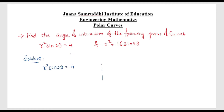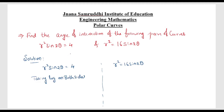For the solution, we'll write the two curves: R² sin2θ = 4 and R² = 16 sin2θ. From both curves we need to find the angle φ. In order to find φ, the first step is to take the logarithm on both sides.